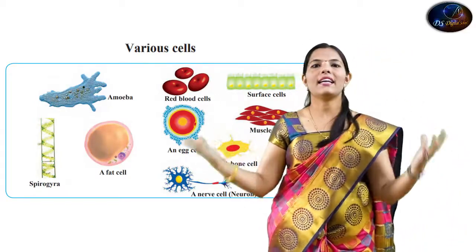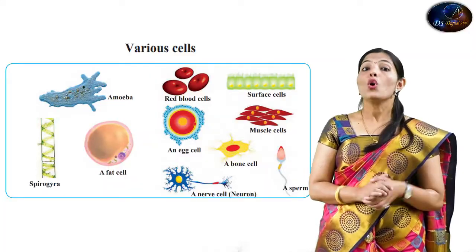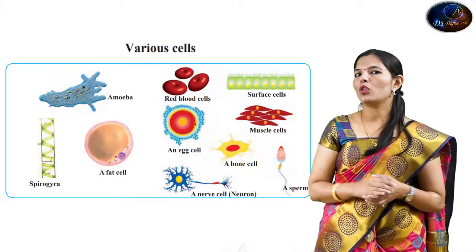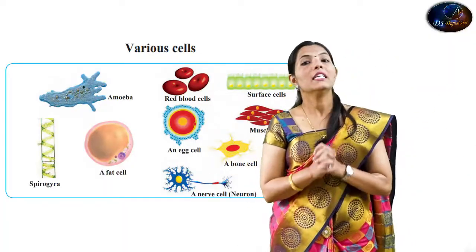In short, we learned about cell size measurement using millimeters and micrometers, the two types of microscopes — compound and electron — and different cell shapes including circular, columnar, oval, spiral (as in spirogyra and sperm), and rectangular. Please like and subscribe, and find interesting topics linked in the description. Bye, students!